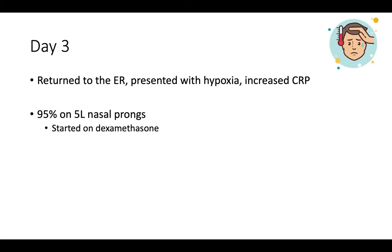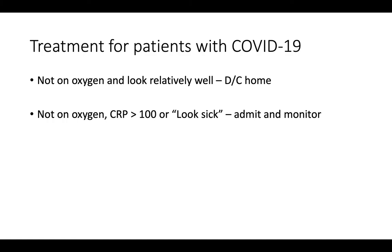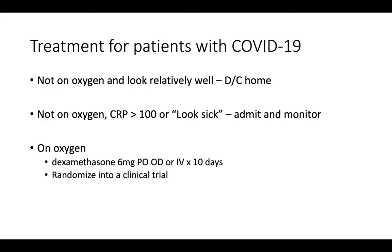Three days later, he returned to the emergency department with hypoxia and a worsening CRP. He was started on nasal prong oxygen and then on dexamethasone. For treatment: if patients are not on oxygen and look relatively well, they can probably be discharged home. If they're not on oxygen but the CRP is above 100 or they look sick, I personally have a very low threshold to hospitalize and monitor. If they're on oxygen, they should be started on dexamethasone — 6 milligrams once a day, oral or IV for 10 days — and ideally randomized into a clinical trial.